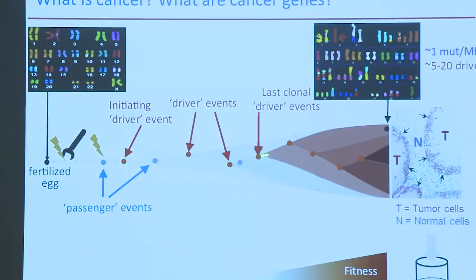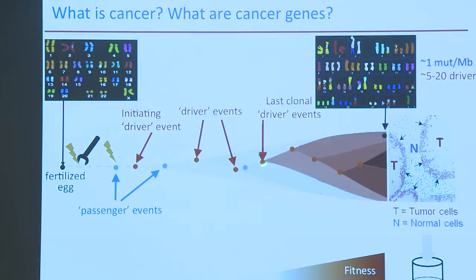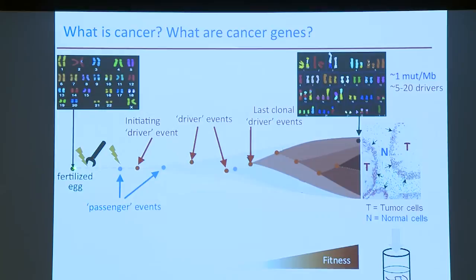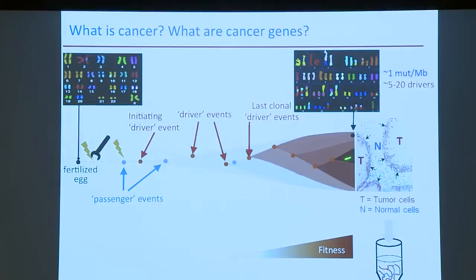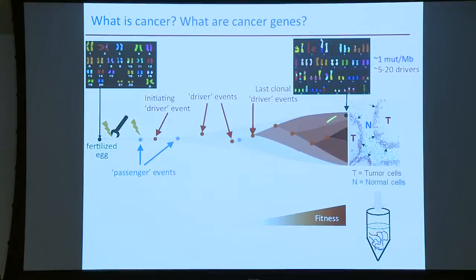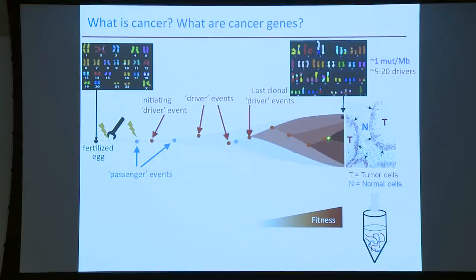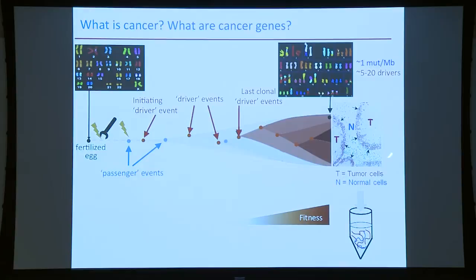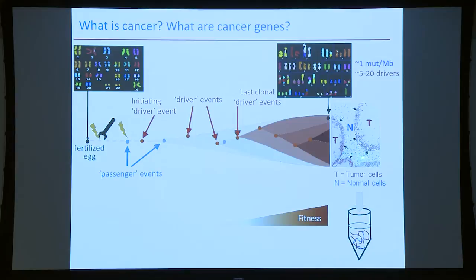The last clonal driver event means that all cancer cells have that mutation, and all mutations that happened before that, all the way to the fertilized egg. Additional mutations are subclonal, meaning they only occur in subsets of cancer cells — like subpopulations in population genetics where some SNPs occur in some people and not others. When we take a piece of tumor, it contains all tumor cells with all this heterogeneity, plus normal cells that don't have these mutations common to the cancer cells.